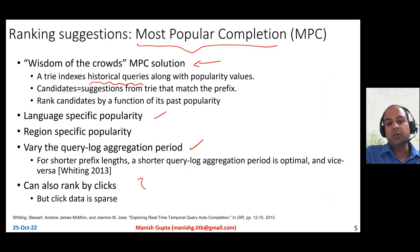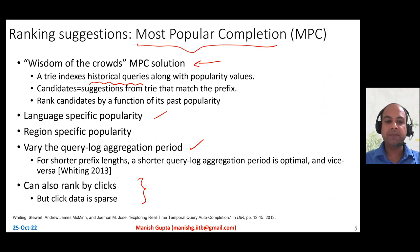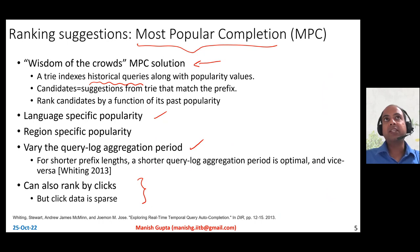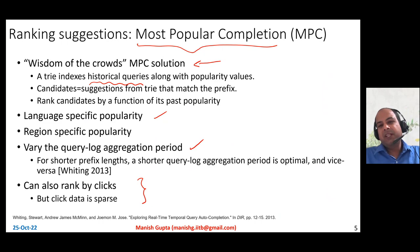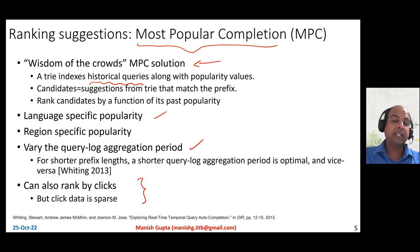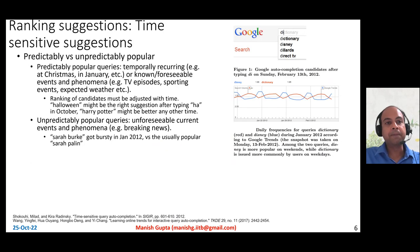Rather than only looking at historical popularity from an impressions perspective — how many times people queried for a suggestion — you may also look at clicks: how many times people queried and then also clicked on a result on the search result page. You could weigh those suggestions higher which were queried more frequently and also clicked more frequently. However, clicks are very sparse in nature, so it's probably good to use clicks for head queries but not so much for longer prefixes.